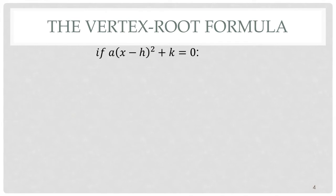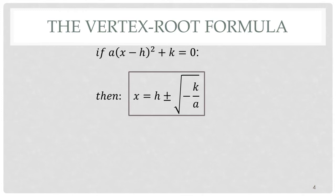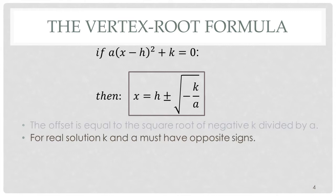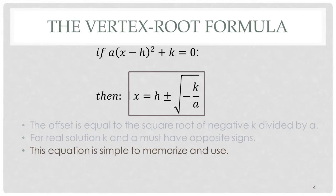It's time to introduce what I call the vertex root formula. If you're given a quadratic in vertex form, the solution for the roots is simply x equals h plus or minus the square root of minus k over a. So the offset turns out it's equal to the square root of negative k divided by a. Notice for a real solution, k and a must have opposite signs. And you can also see that this equation is pretty straightforward — very simple to memorize and very easy to use.